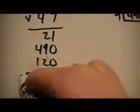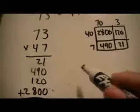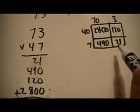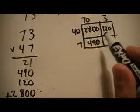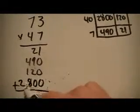And then I'm going to add all these numbers together. The cool thing about this strategy is they can see 21 is here, 490 is here, 120 is here in the area model, and 2800 is there as well.